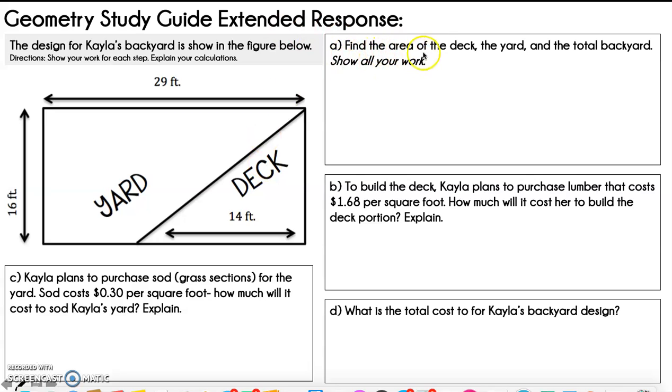So it says A, find the area of the deck, the yard, and the total backyard. Let's start with the yard. If you look at the yard, our yard is a trapezoid.